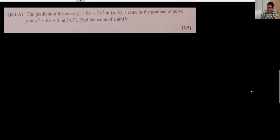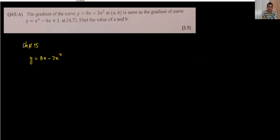Moving to question number 3. The gradient of the curve equals the gradient of another curve. This involves differentiation — chapter 15 in the additional maths book. For y = 8x - 3x², differentiating gives dy/dx = 8 - 6x. This is the gradient function.